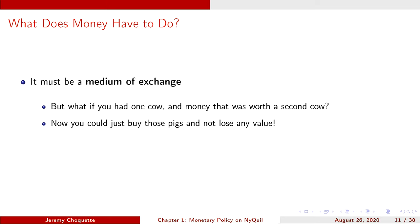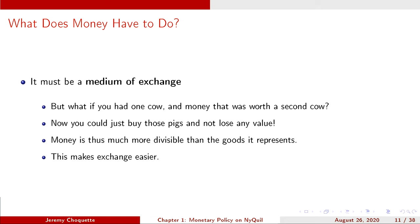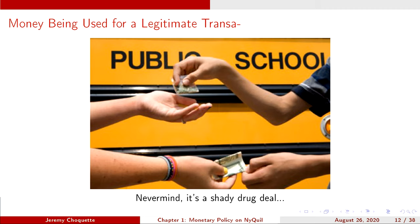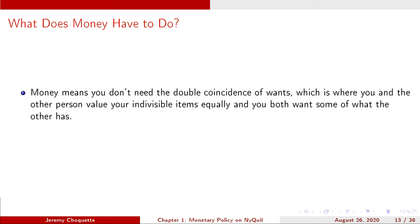With money, you could just buy the pig and not lose any real value. The economy is going to be fine because money is much more divisible than the goods it represents — this makes exchange much easier. Money in this case means you don't need the double coincidence of wants, which is where you and the other person value your items equally and both of you want the other item. That kind of only happens by chance; it's not a particularly easy thing to make happen.